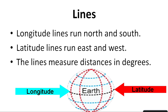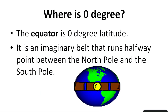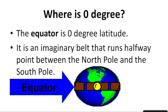Zero degree latitude is the equator. It is an imaginary belt that runs halfway between the North Pole and the South Pole. This line makes a perfect circle and makes up the largest possible circle on the globe. It divides the globe into two equal halves — north and south. So this is the equator line.